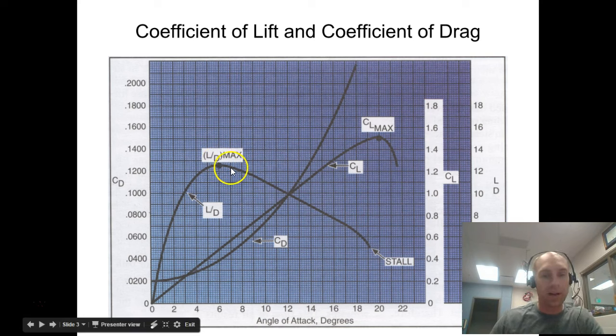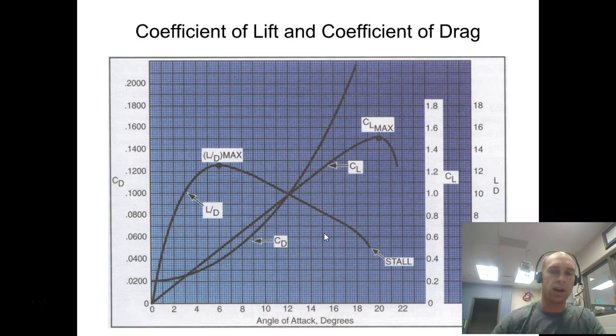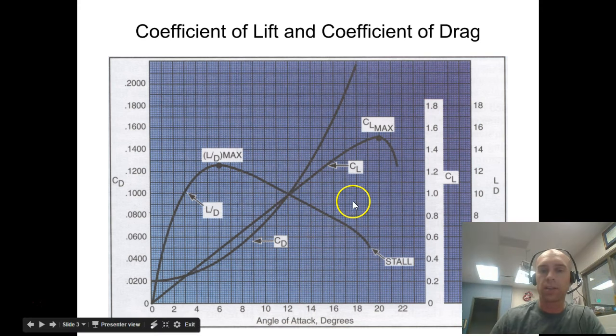If we increase our angle of attack, you can see your lift-to-drag ratio drops. Here they're showing a stall around 19 degrees. You definitely start to become less efficient at lift as you increase your angle of attack.